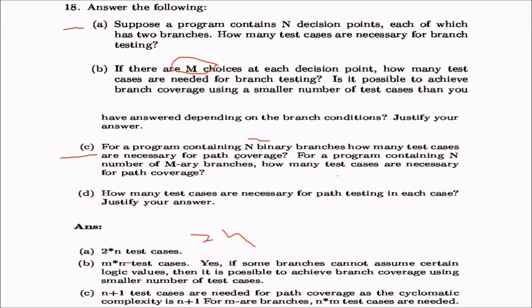For a program containing n binary branches, how many test cases are needed for path coverage? The answer is n+1, since cyclomatic complexity is n+1 for n binary branches. For m-ary branches, that would be n×m test cases. The number of test cases necessary for path testing is given by the cyclomatic complexity.